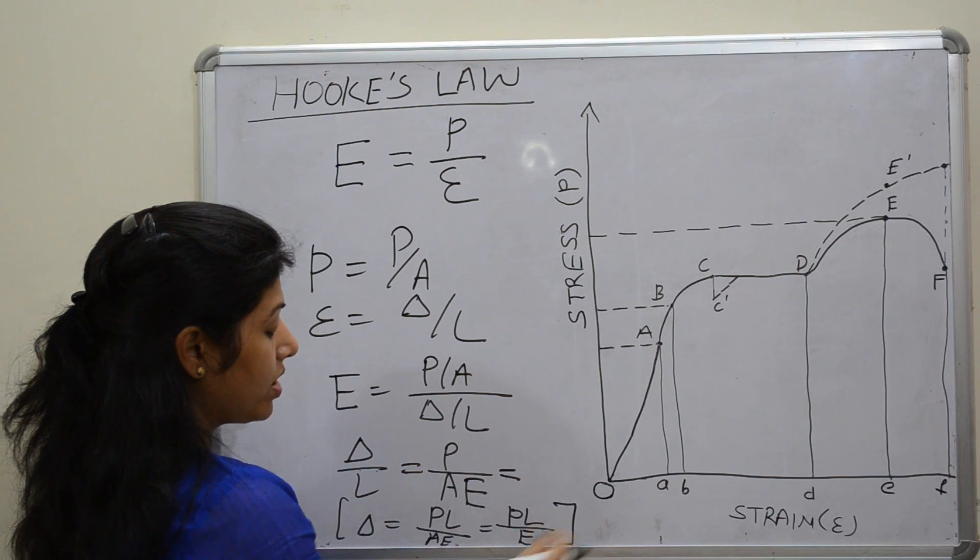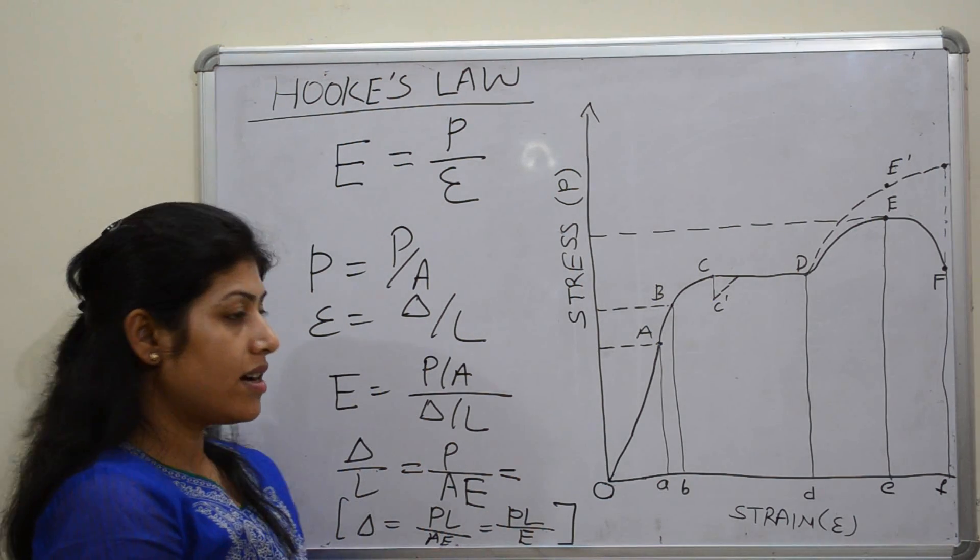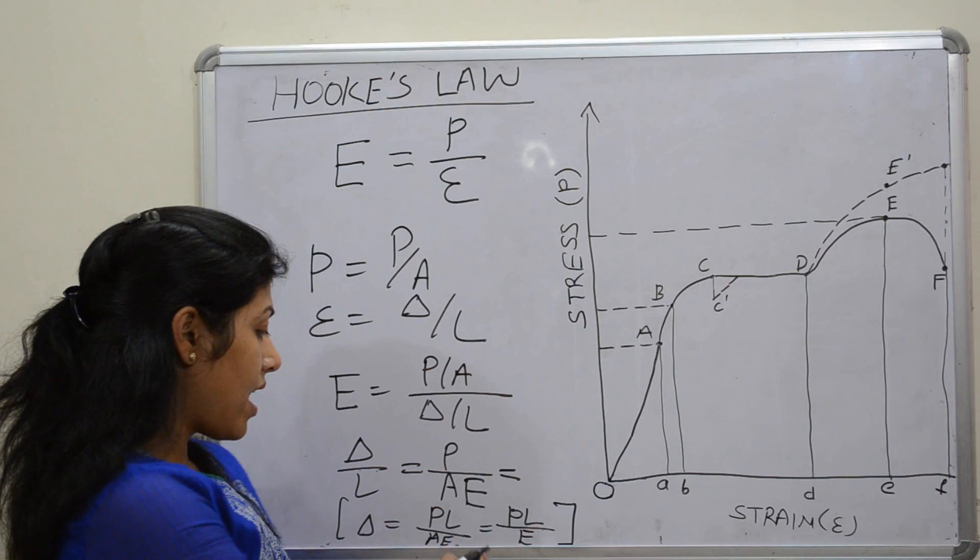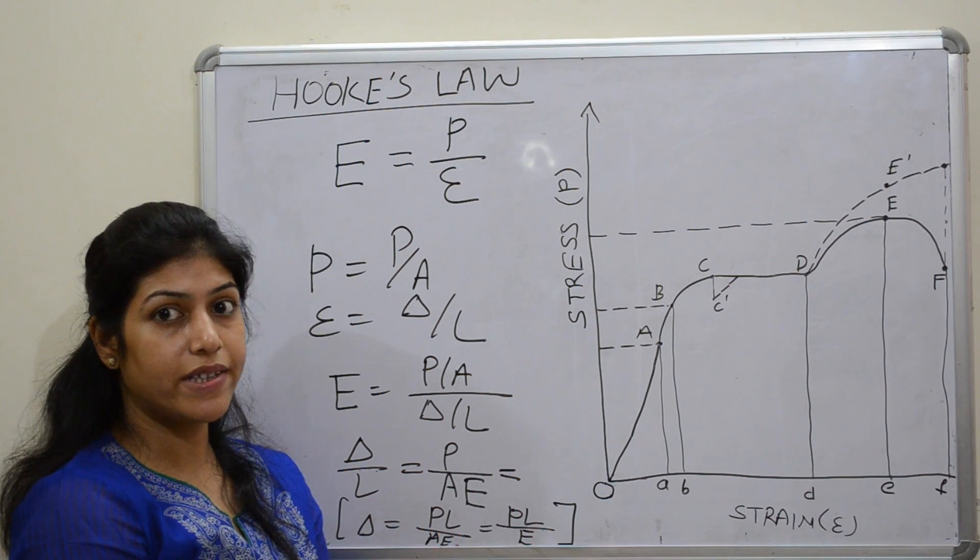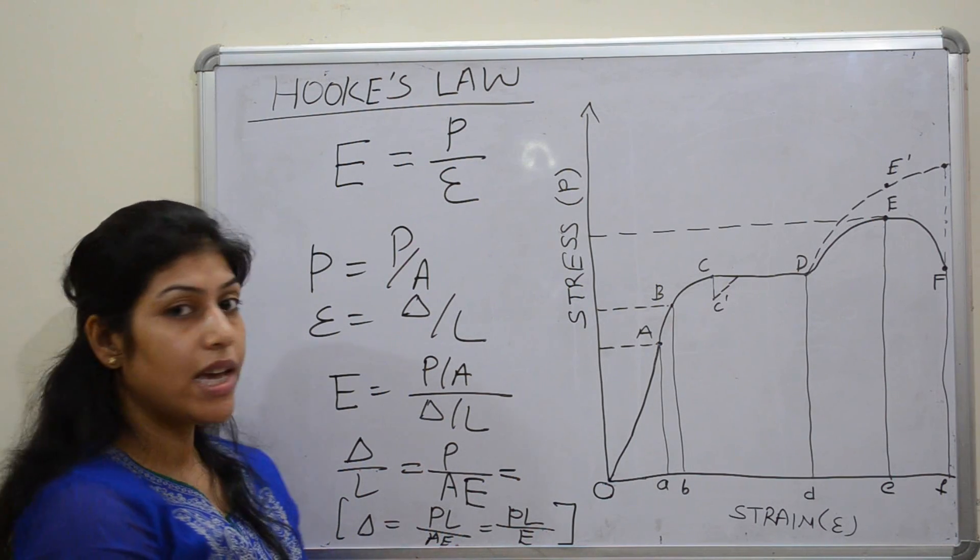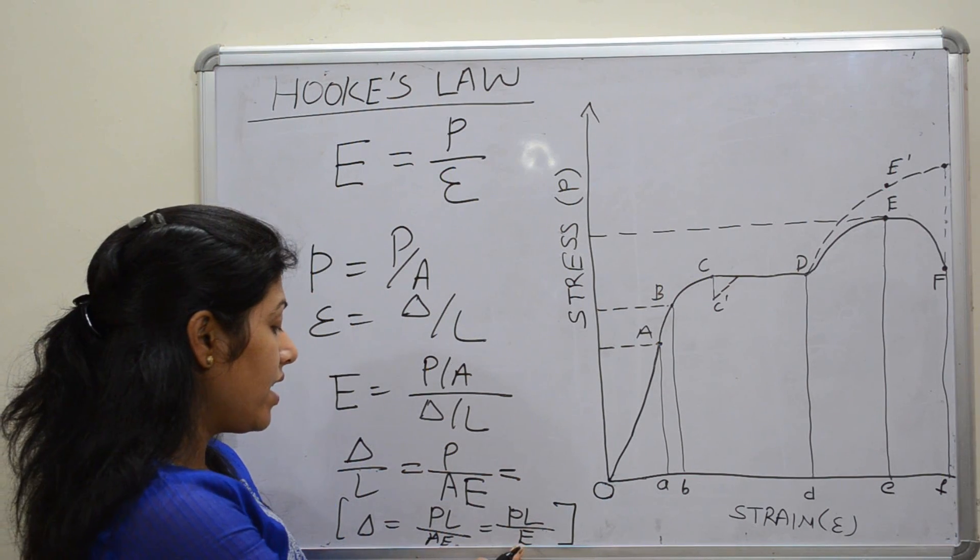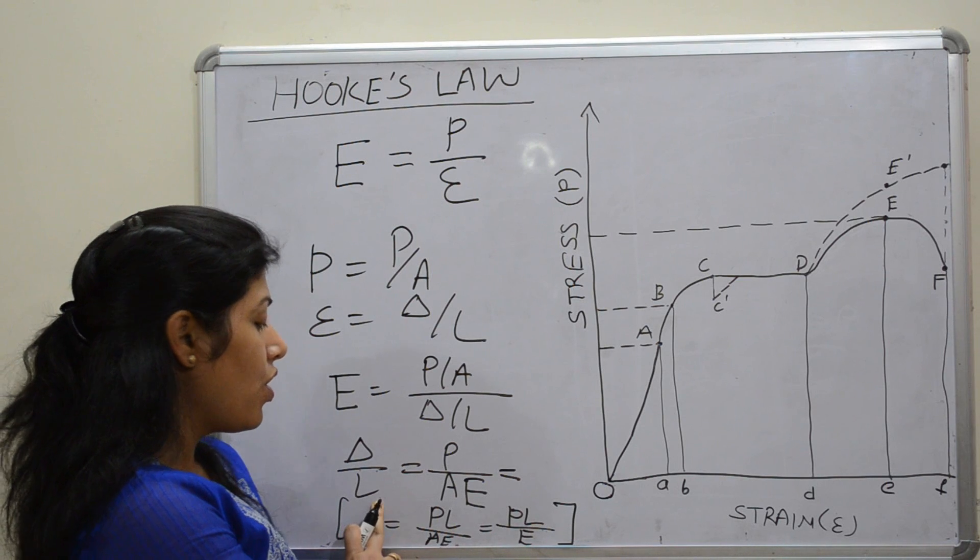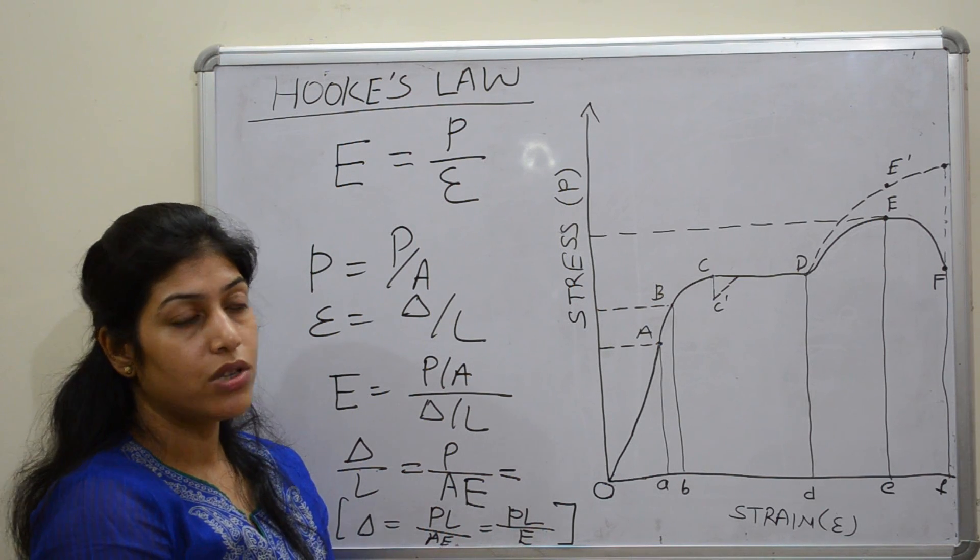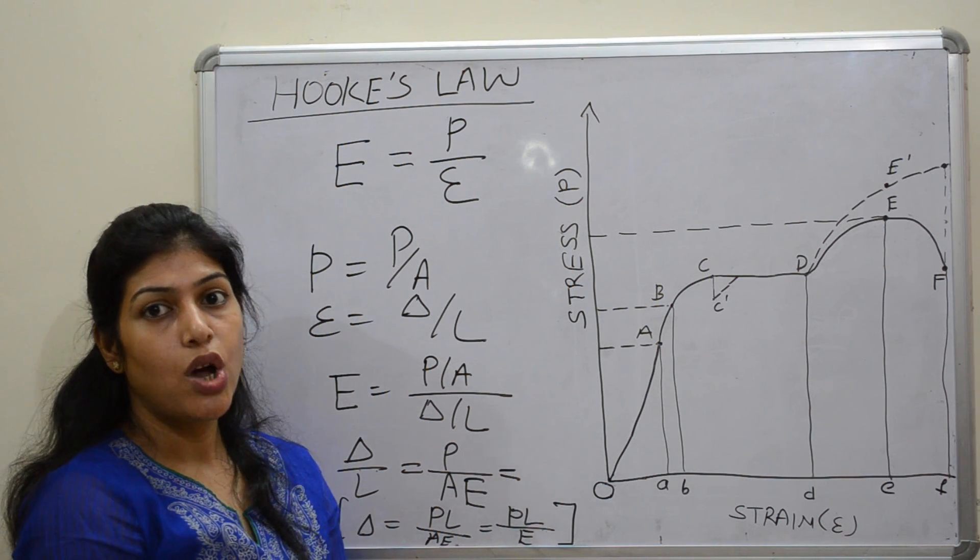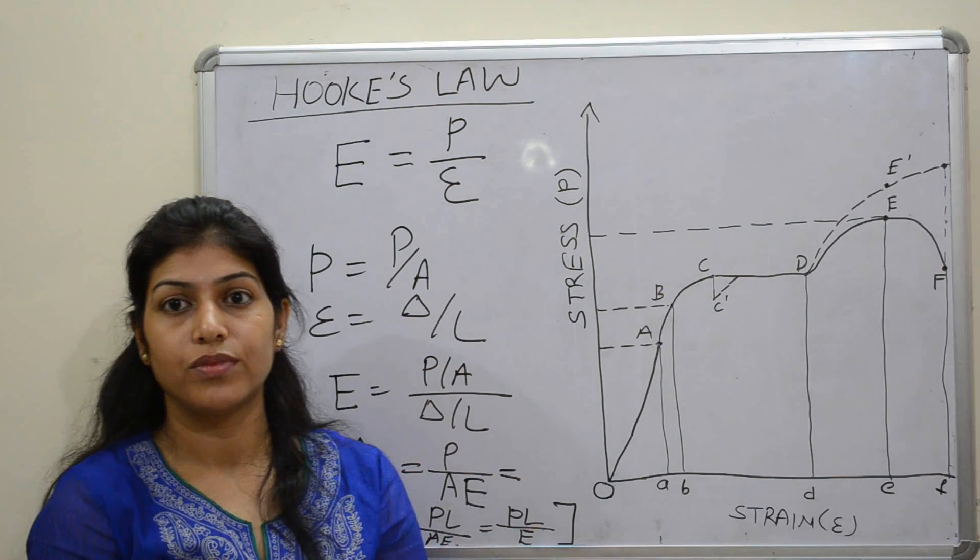According to this equation we can say most of the metals have high value of E since the value of strain is less. In that condition we can say the value of E is inversely proportional to value of strain. So this was all about Hooke's Law. Thank you.